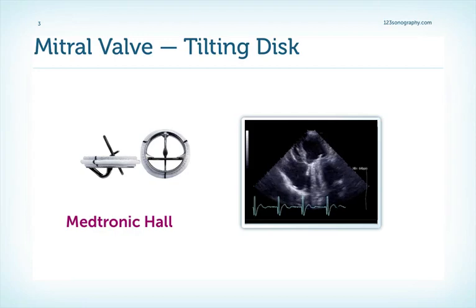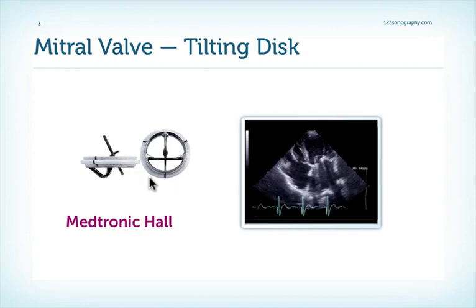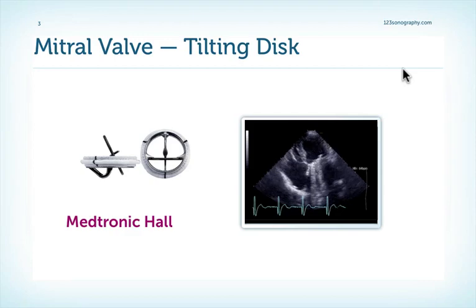First, here is a tilting disc valve. Remember, we only have one disc, which is asymmetrically positioned. We have two orifices, one here which is smaller, and another one which is larger. Here is the corresponding echo of a patient who has such a Medtronic Hall valve.